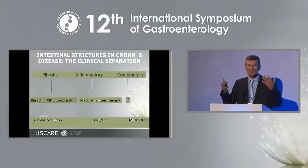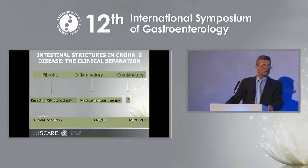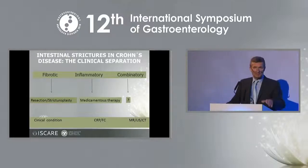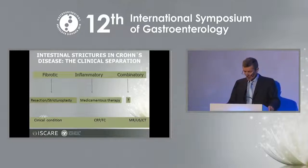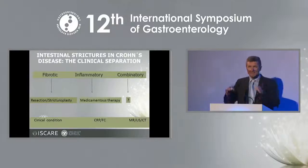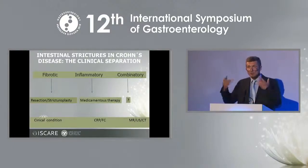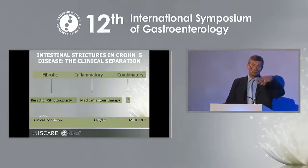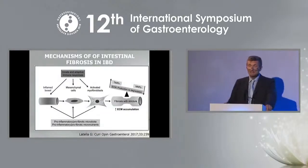We use clinical assessment, especially whether obstruction symptomatology is present or not. We use biological markers: CRP in the serum, especially in Crohn's, and fecal calprotectin in both diseases, which is very helpful. New imaging methods using magnetic resonance, ultrasonography, and CT scan help differentiate fibrosis from inflammatory lesions. Some new techniques such as magnetization transfer MRI and elastography — applied from liver pathology — are now used in clinical practice in Crohn's disease patients.